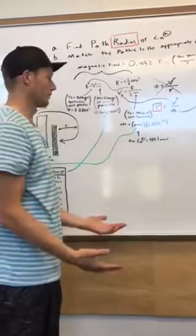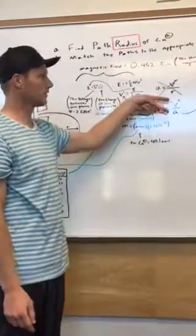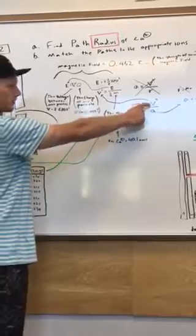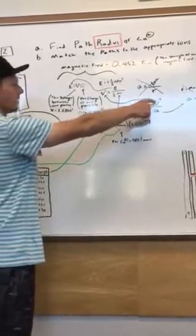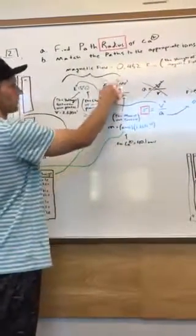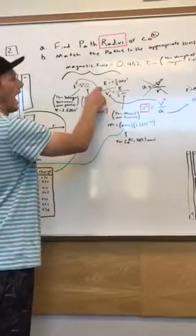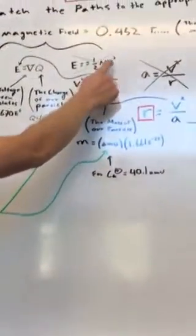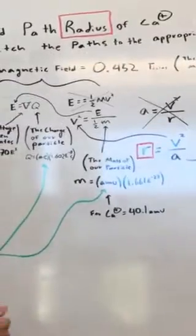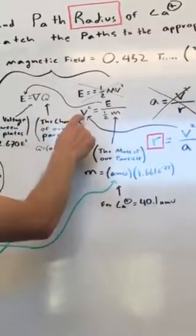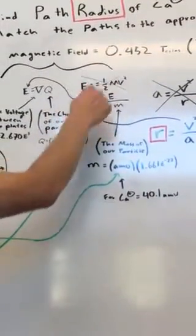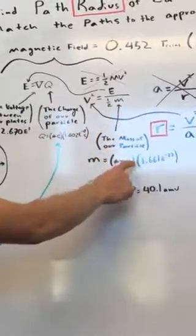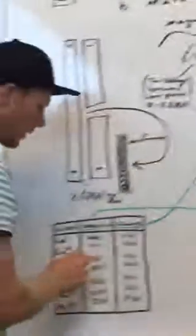We just have to find these two other variables. The first one is velocity. For velocity, we use this equation: energy equals one-half mass times velocity squared. We rearrange that and we get this. Then mass is the mass of our particle.